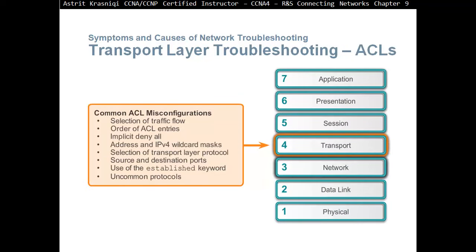At layer four and above, we look at common access control list misconfiguration — selection of traffic flow, and the order of ACL entries. Maybe you put general entries at the top and more specific ones at the end. Then there is implicit deny — if you create an ACL that only has deny statements and no permit statement, you are denying everything. Also check the IPv4 wildcard mask in case it is wrong. For the selection of transport layer protocol, for example using UDP instead of TCP, or vice versa, can be a problem.